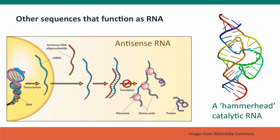Another category of non-coding sequences very important for function are other molecules that function as RNAs. Some RNAs are themselves catalytic, like the ribosome, but much smaller. This is an example of a simpler RNA folded into a structure called a hammerhead structure — it's a catalytic RNA held together by base pairing, where bases pair with each other to create the secondary structure that gives it its catalytic function.